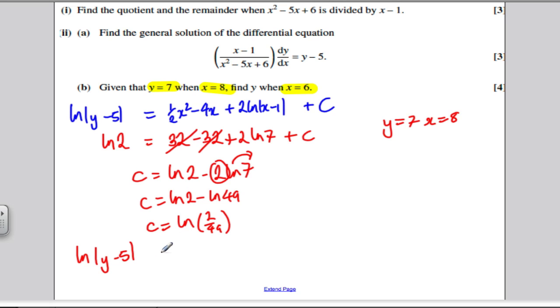So now I've got a particular solution to my differential equation. It's ln Y, ln of Y minus 5 is equal to a half x squared minus 4x plus 2 ln x minus 1. And then plus my constant, which I've now worked out, plus ln 2 over 49. Now it wants you to find y when x is 6.